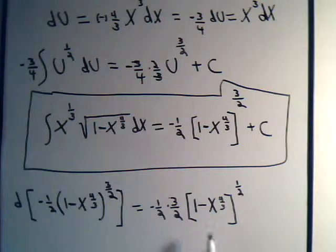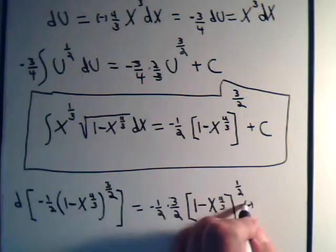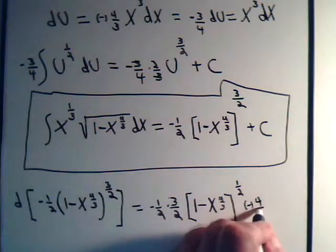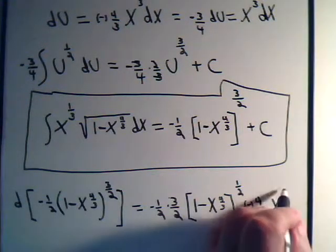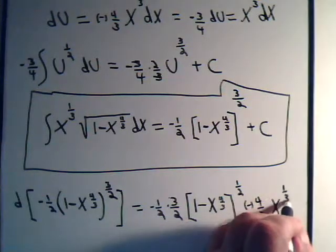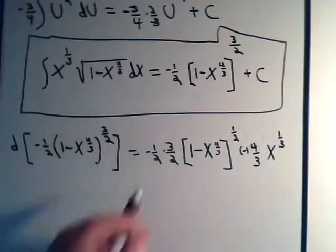And we have to multiply it by what's inside of this parentheses. Here we have minus x to the 4/3. So that would be minus 4/3 times x to the 1/3. 4/3 minus 1 is 1/3.